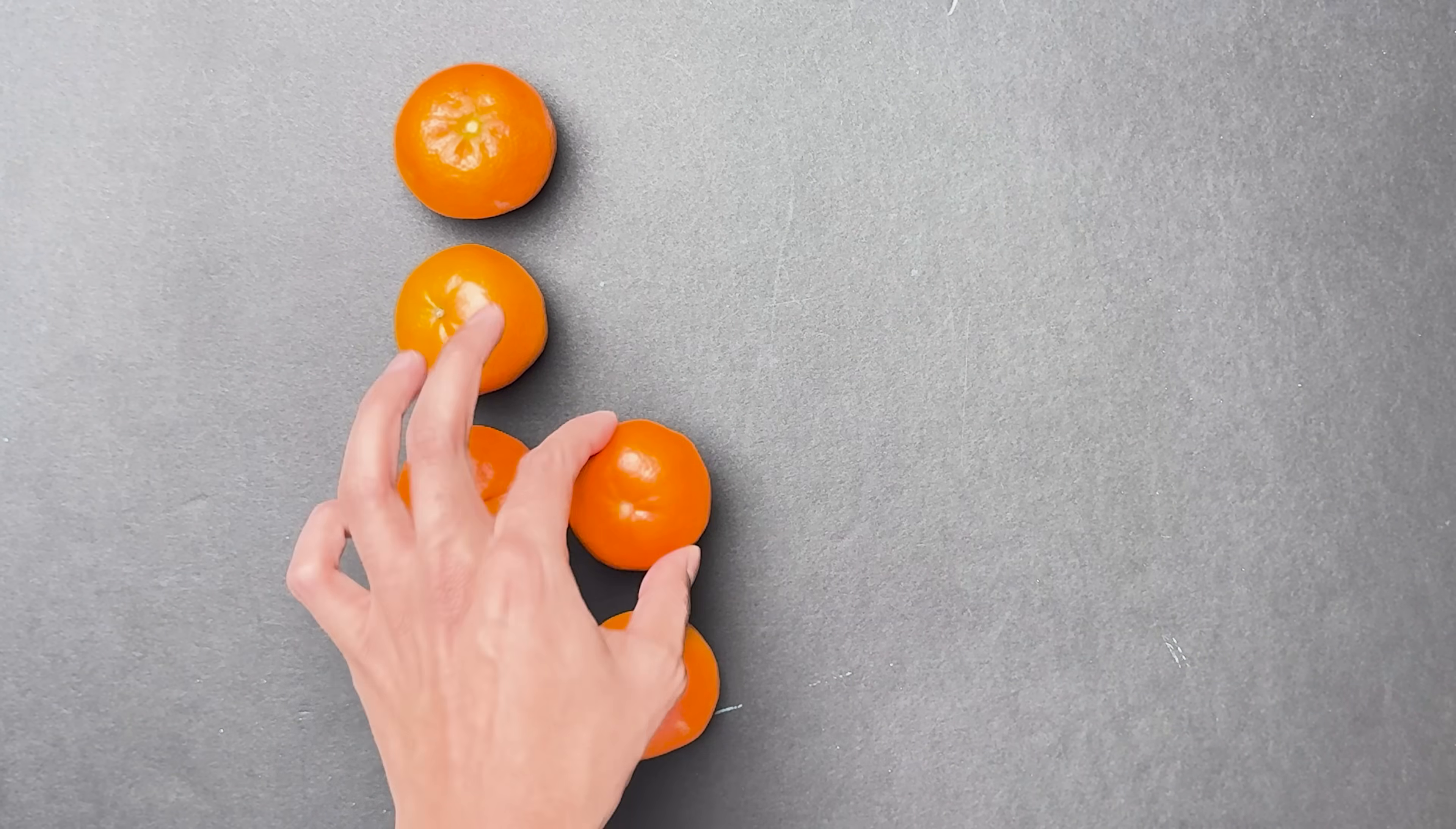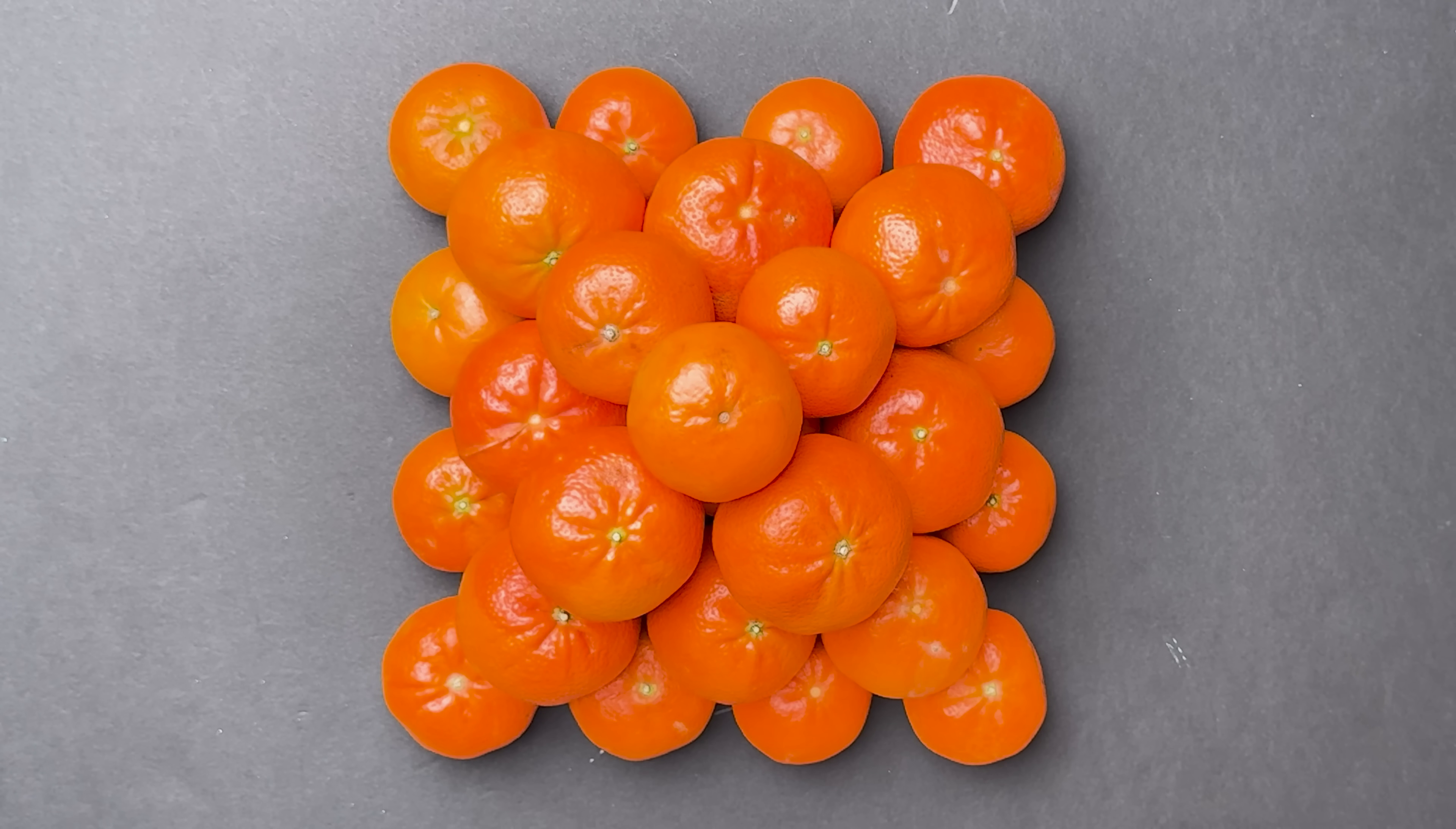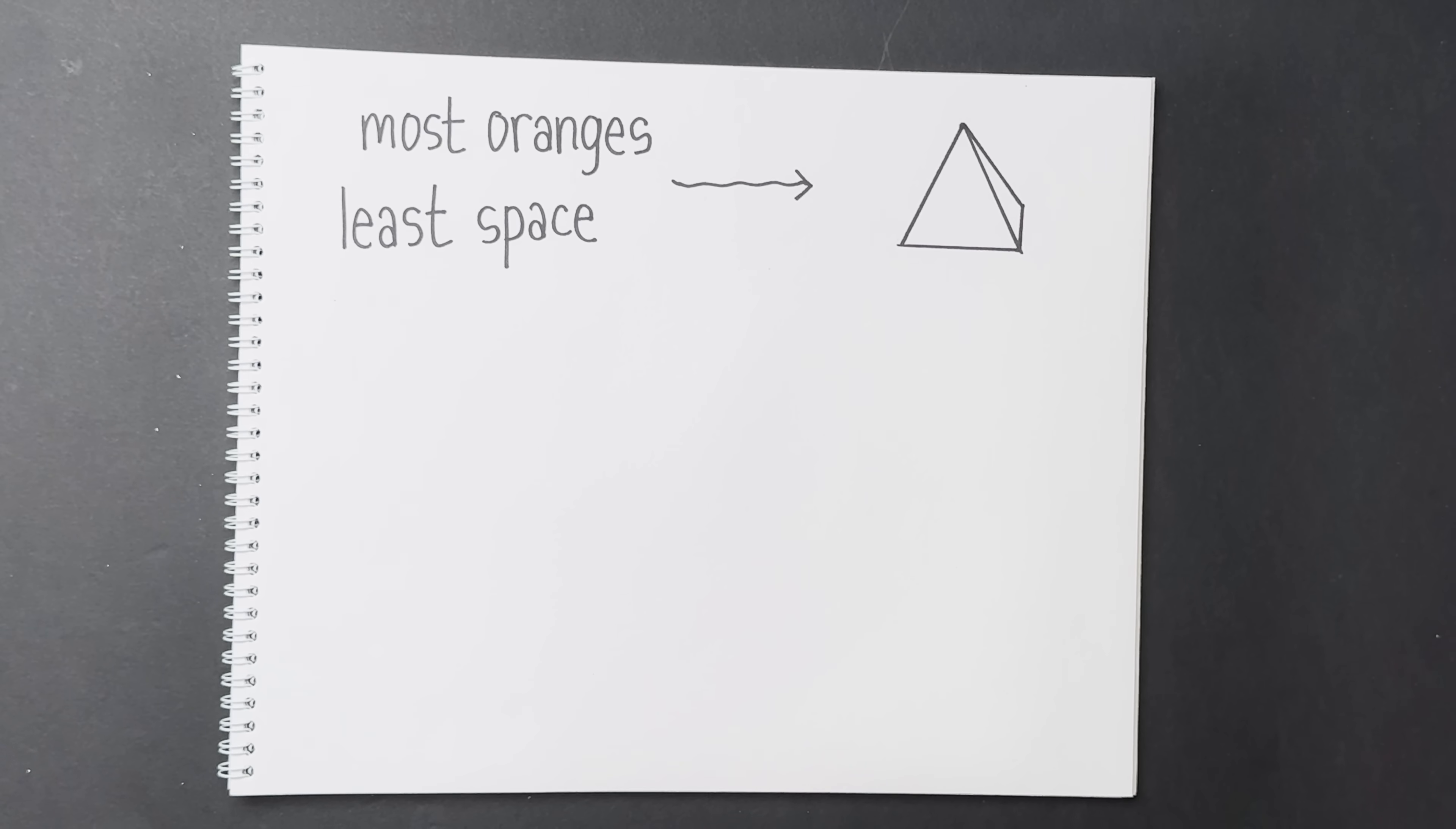Have you ever noticed that whenever you go to the supermarket, the oranges are always stacked in the exact same shape? A pyramid. There's a mathematical reason for this. It turns out that if you want to fit the most oranges in the least amount of space, the best way to stack them is in a pyramid shape.